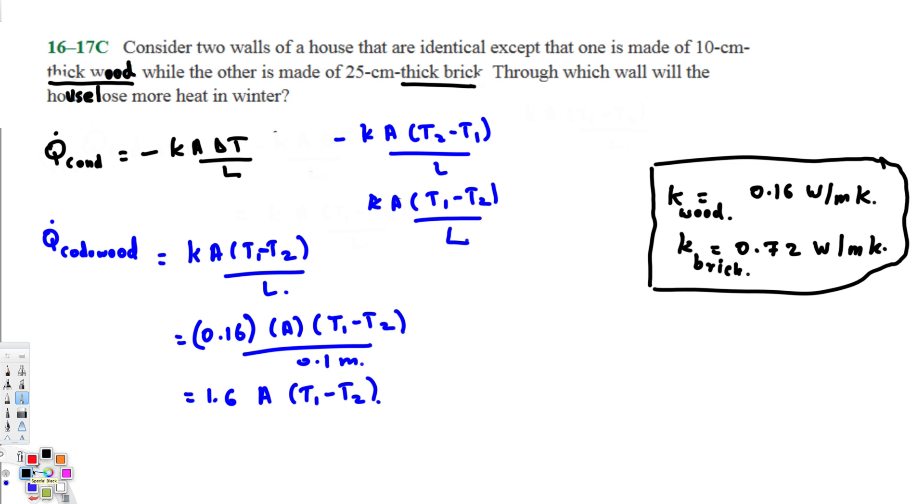Q̇_brick conduction is going to be equal to k A (T1 minus T2) over L. We know the thermal conductivity, that is 0.72 watts per meter Kelvin. Let's avoid the units for now: A times (T1 minus T2).